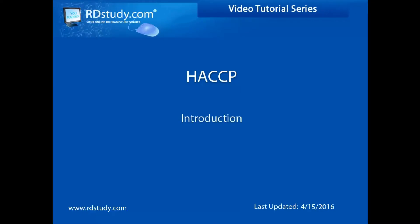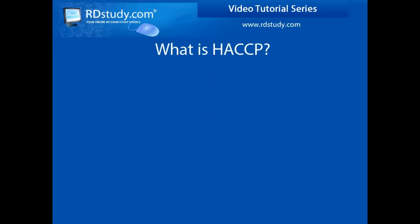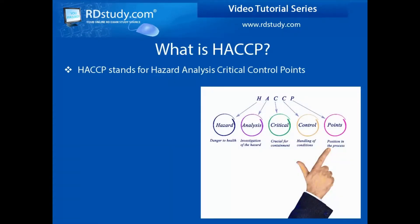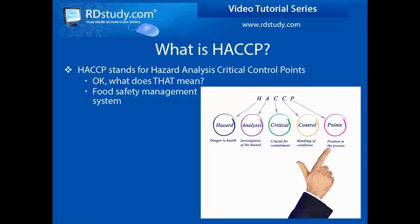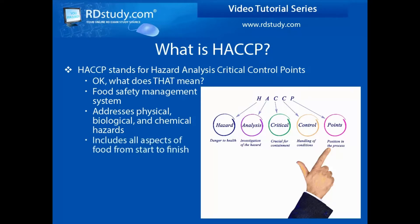We now introduce the concept of HACCP. What is HACCP? It is an acronym for Hazard Analysis Critical Control Point or Points. In a broad sense, it is a food safety management system that analyzes for possible hazards all along the food process chain within your organization.